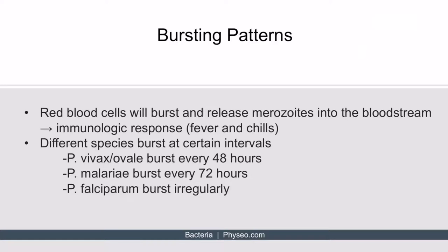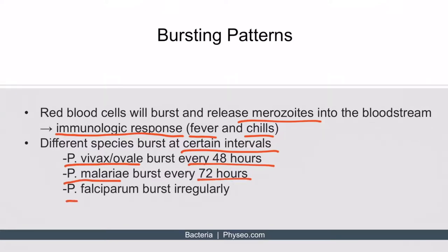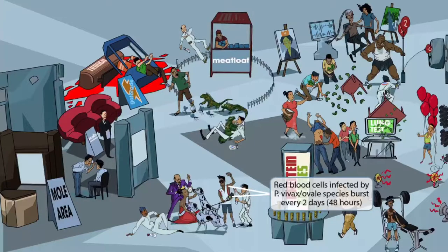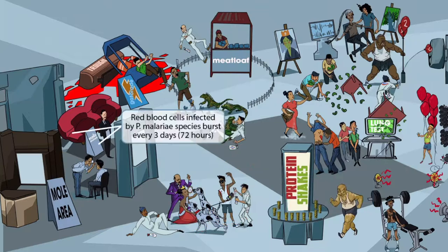Red blood cells will burst and release merozoites into the bloodstream, triggering an immunologic response giving the patient fever and chills. Different species burst at different intervals: Plasmodium vivax and ovale will burst every 48 hours, or two days; Plasmodium malariae will burst every 72 hours; and Plasmodium falciparum will burst irregularly. To help remember that vivax and ovale burst every 48 hours: two species together for two days, or the vivax and ovale guy has two dogs — one and two.